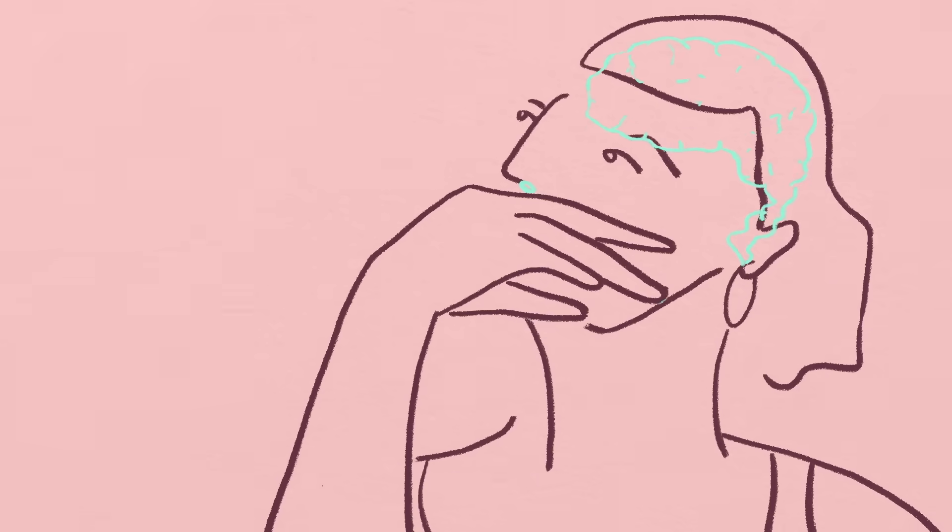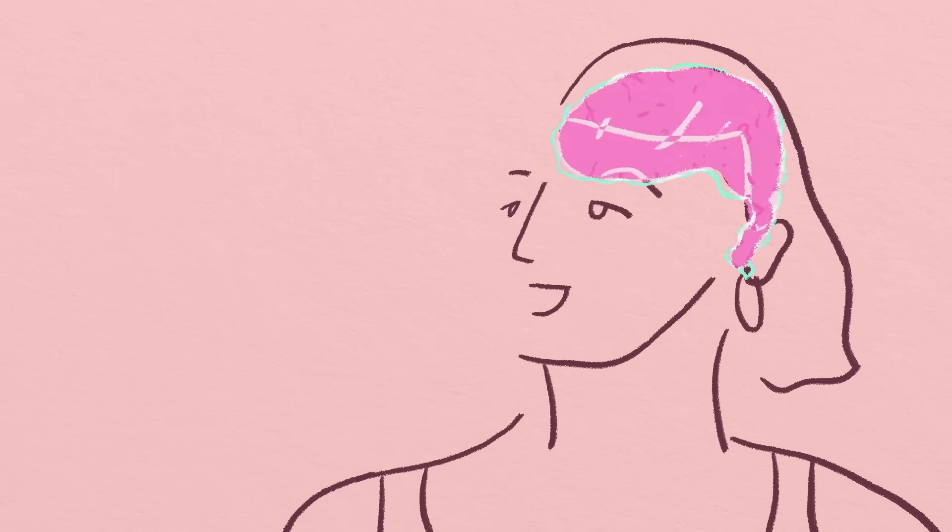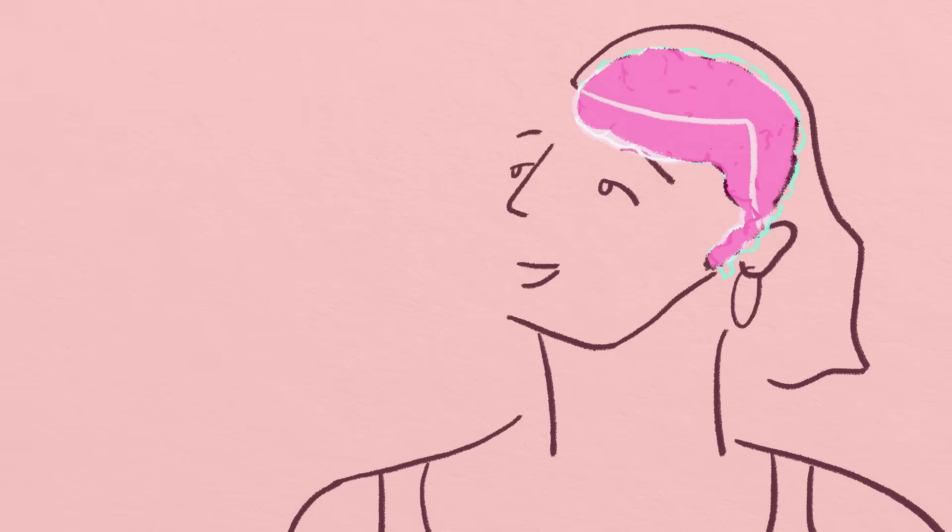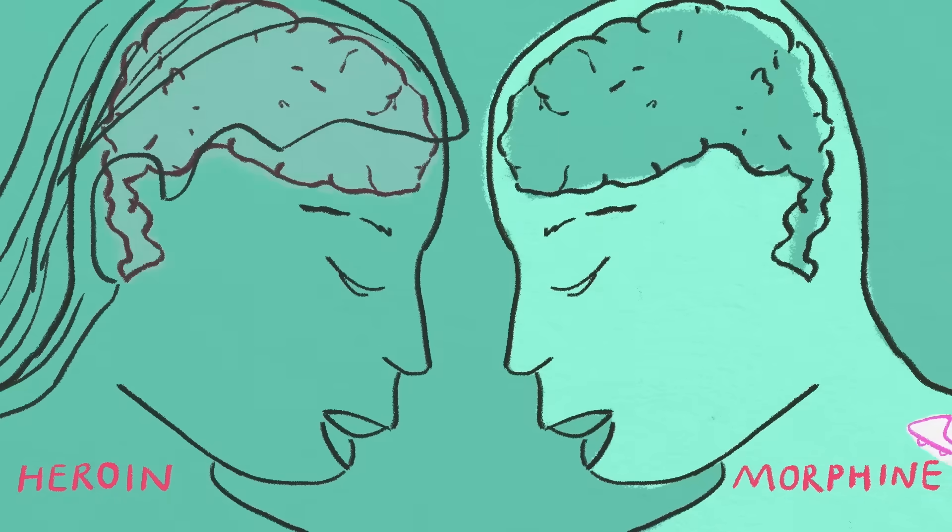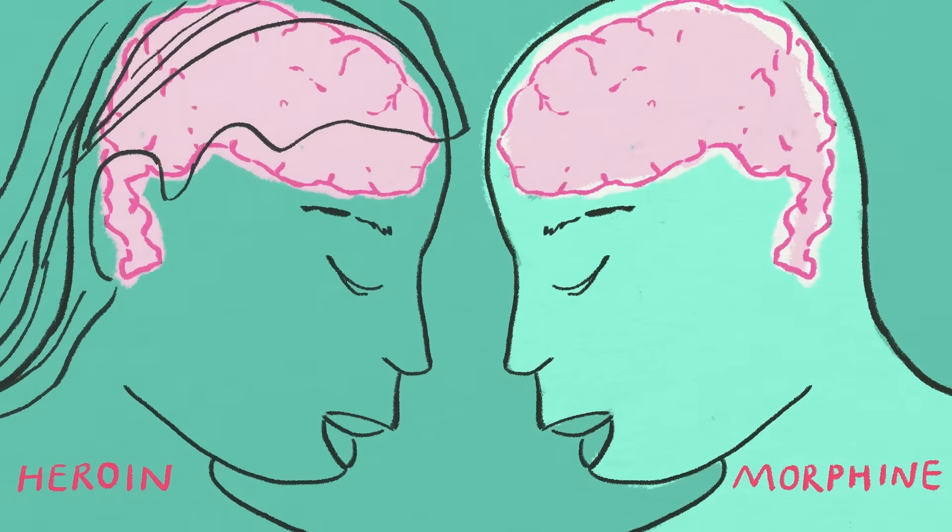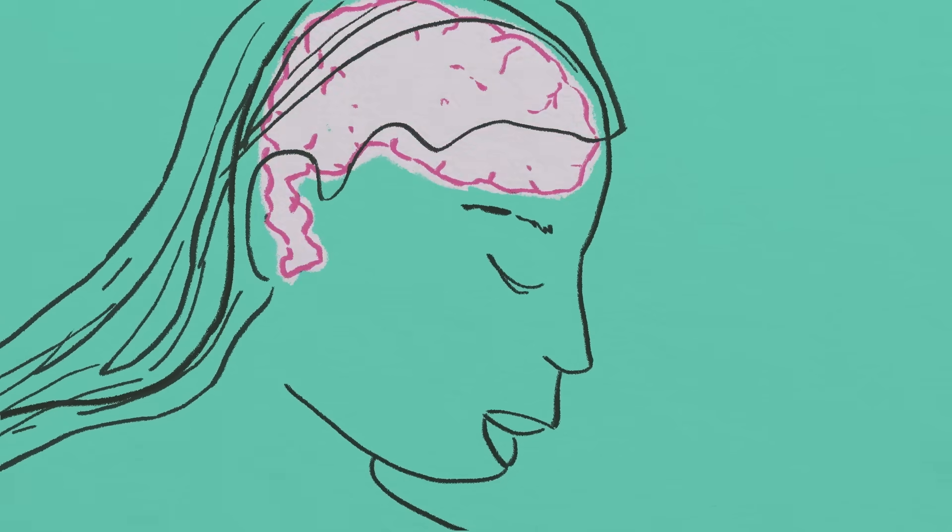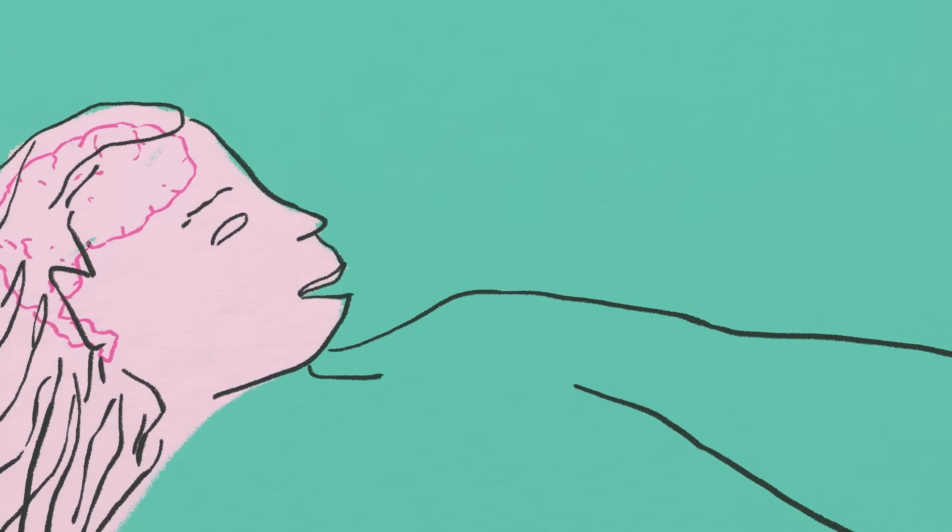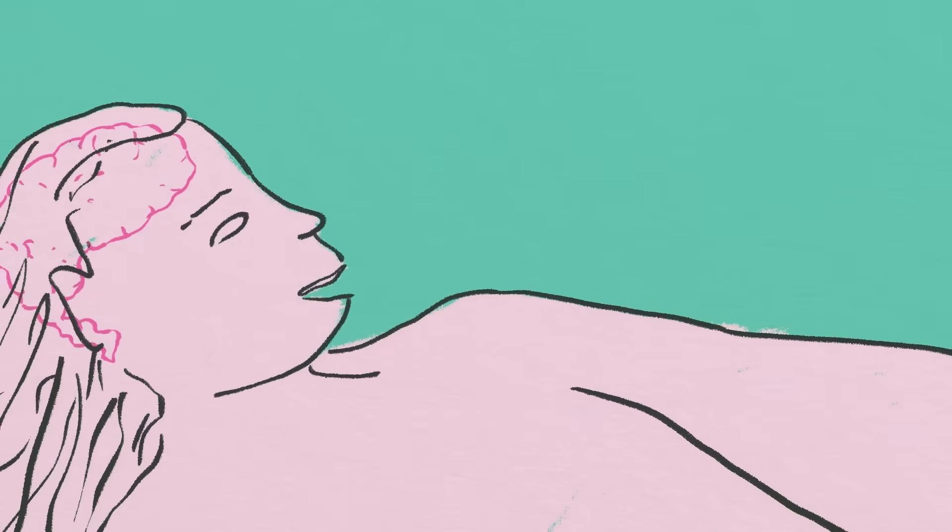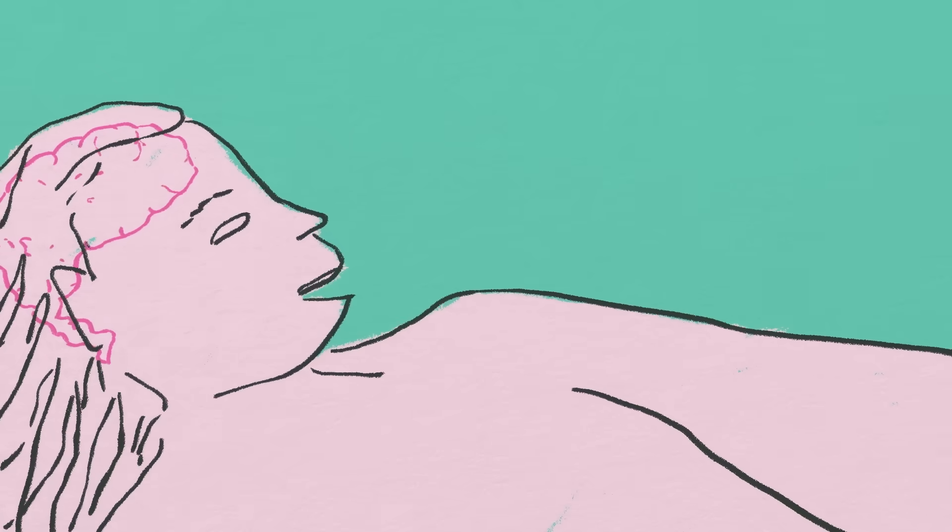The faster a drug reaches the brain and stimulates the reward pathway, the more addictive it is. For example, heroin and morphine have similar effects, but heroin's chemical structure enhances its ability to penetrate the blood-brain barrier and bind to specific receptors. This makes it faster-acting and more addictive than morphine.